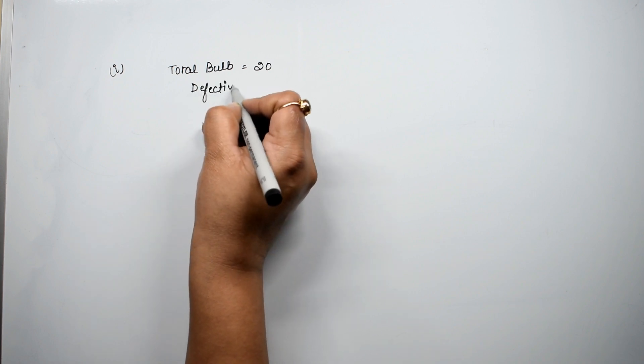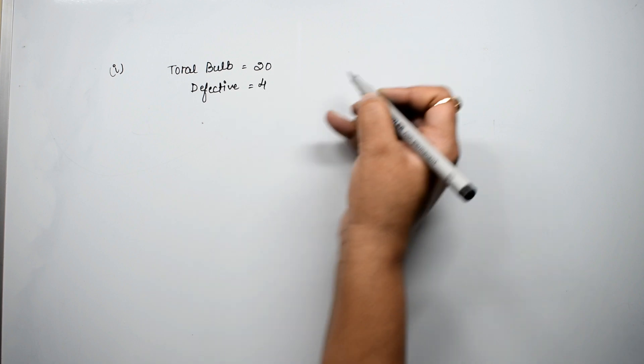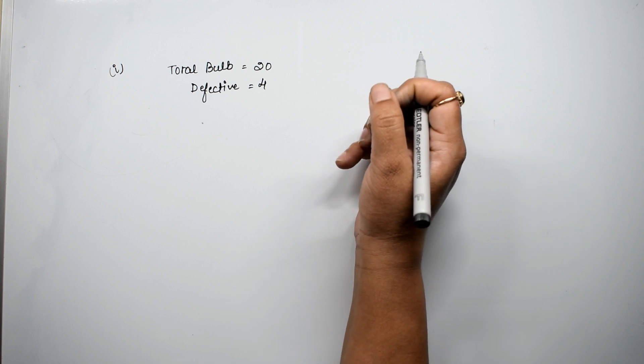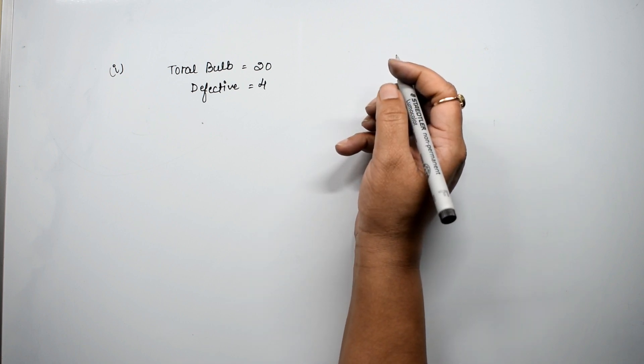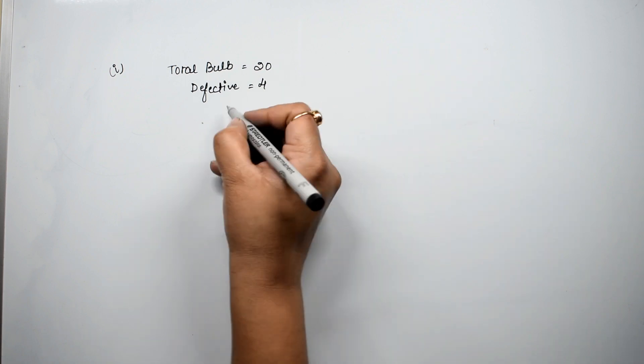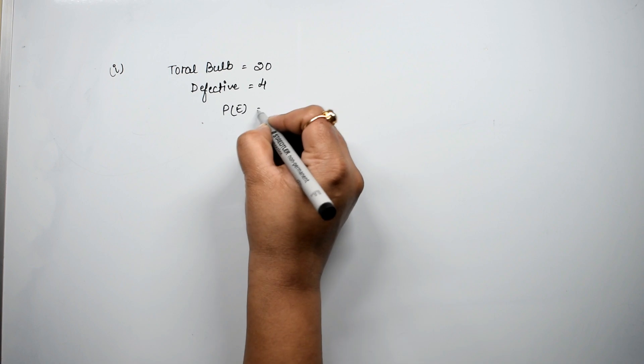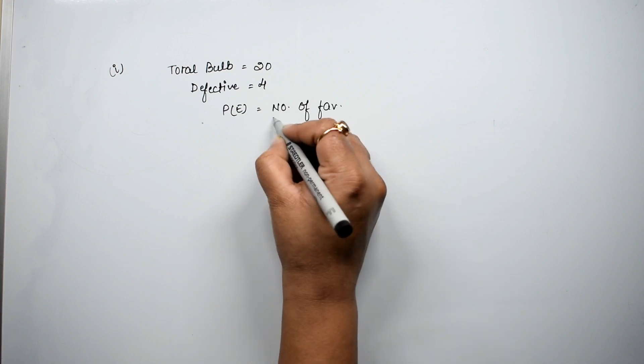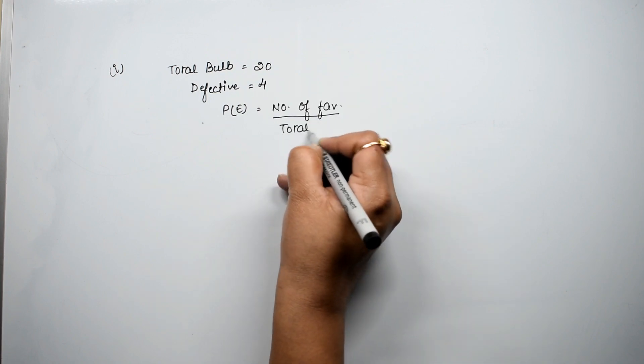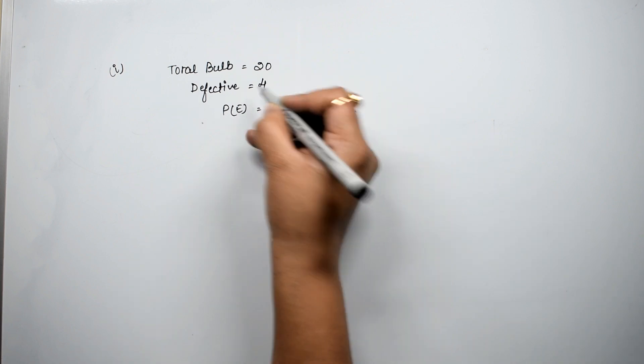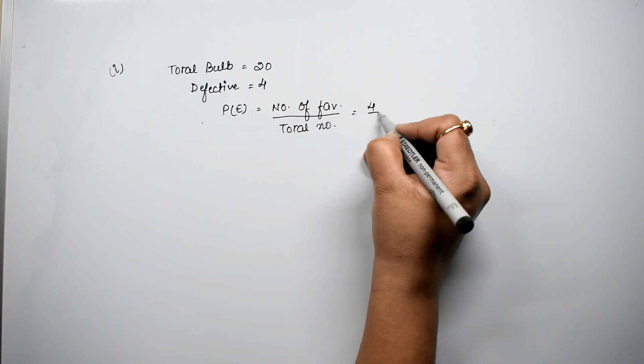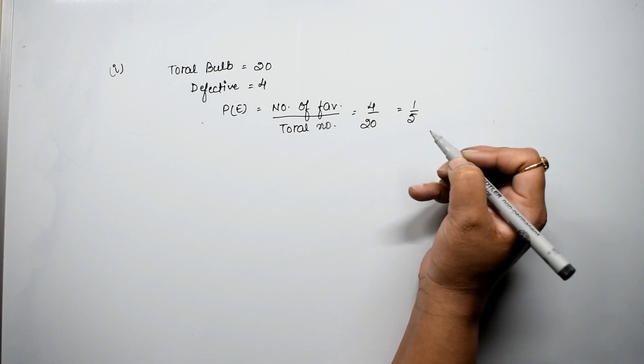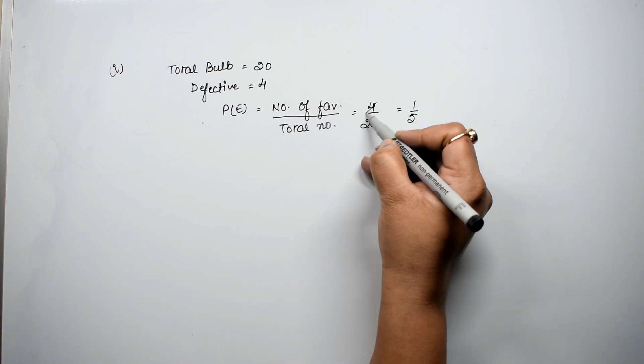One bulb is drawn at random from the lot. What is the probability that the bulb is defective? Probability formula is number of favorable divided by total number. We need defective bulb probability, so defective were 4 and total were 20, so 4 upon 20, or we can say 1 upon 5 is the answer.